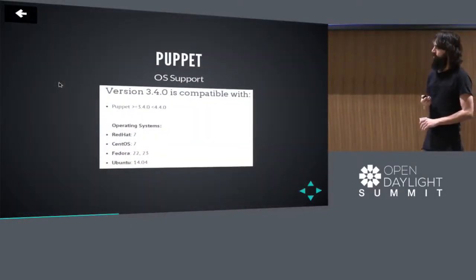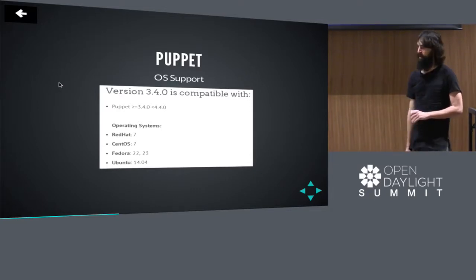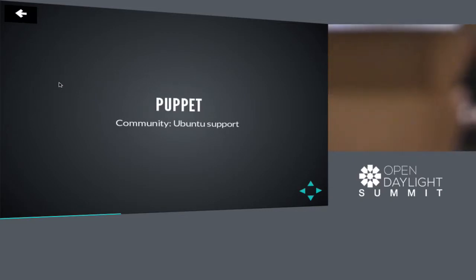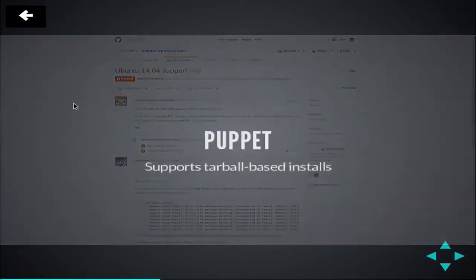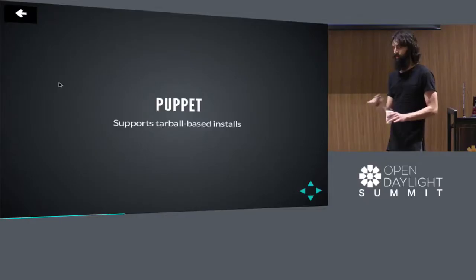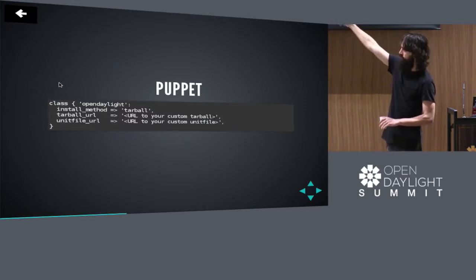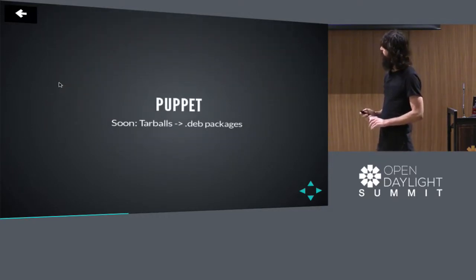The Puppet module has the widest OS support. Even before we had our DEB package, we were able to support Ubuntu-based installs — shout out to David from Orange for that pull request. Before we had DEBs, we could also do tarball-based installs in the Puppet module, but they're very complicated. We're soon going to rip out all of that logic and replace it with simple package management logic using DEBs. Basically, we were providing a link to a tarball and a systemd unit file and doing everything the RPM does manually in Puppet logic, which is way more complicated than it needs to be.